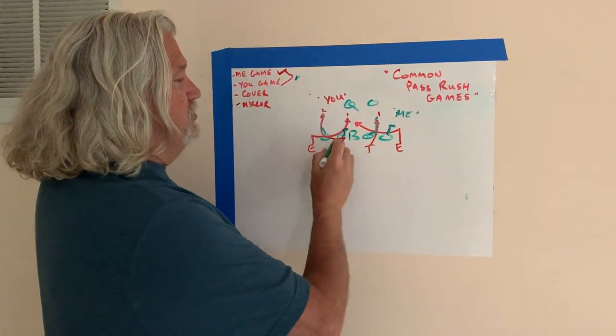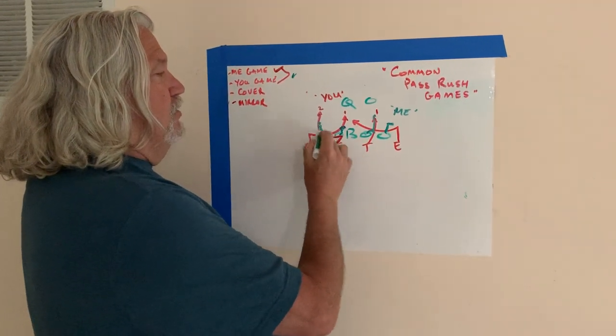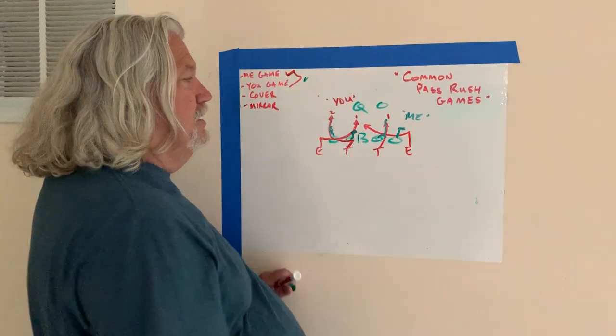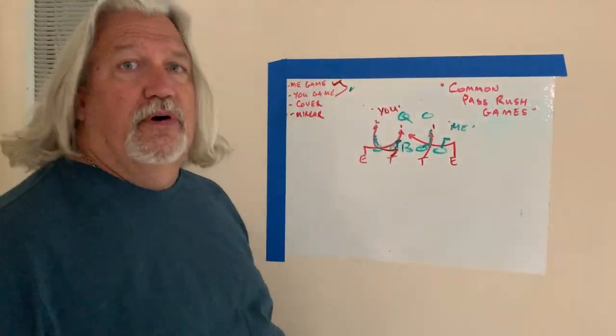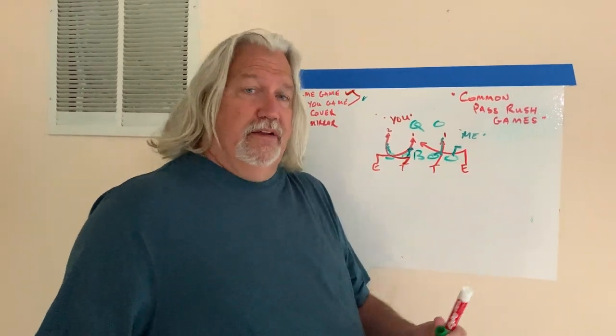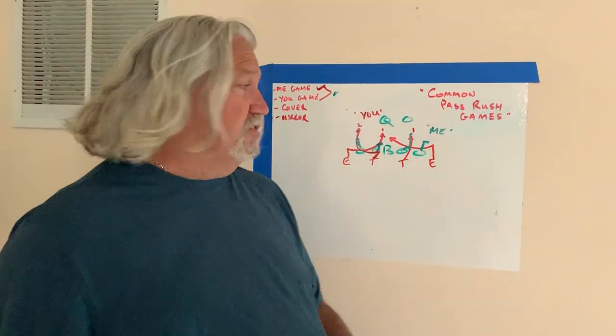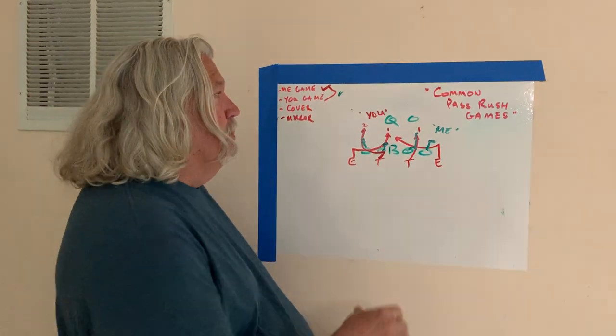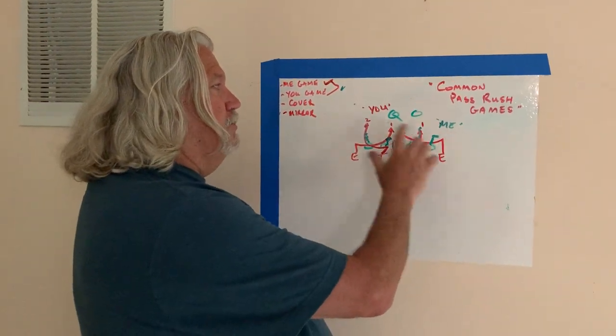That creates the separation for the tackle now to come around to contain. And that's also putting on something else to think about for the offensive lineman. He doesn't want to get hit. So he's not expecting it. He doesn't see it and he takes one in the ribs. So that's the difference of a me and you game.